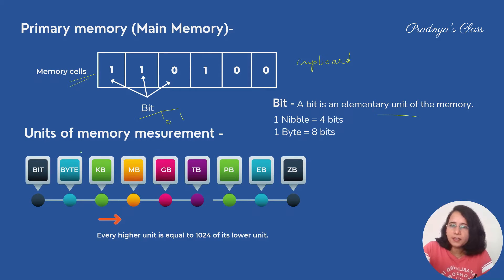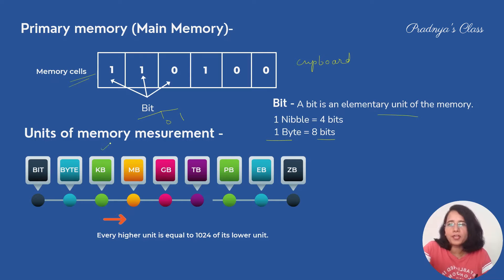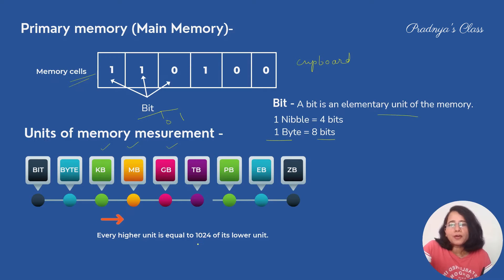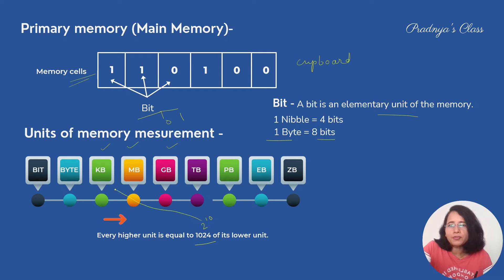There are many memory measurements: 8 bits equals 1 byte, and there are other units — KB, MB, GB, and so on. Every higher unit is equal to 1024 of its lower unit, that is 2 raised to the power of 10. If you multiply 2 raised to power 10 to the previous unit, you get the next unit of measurement.